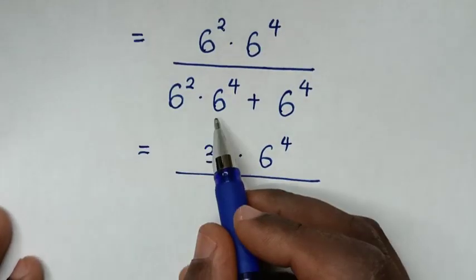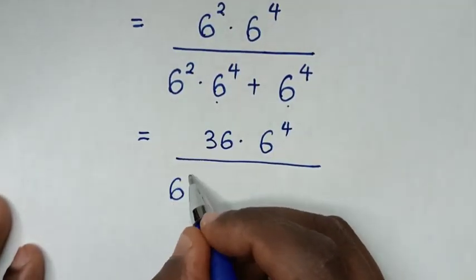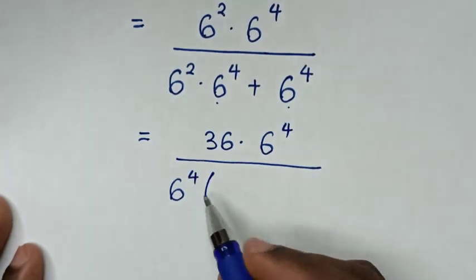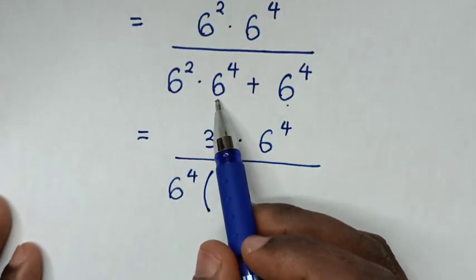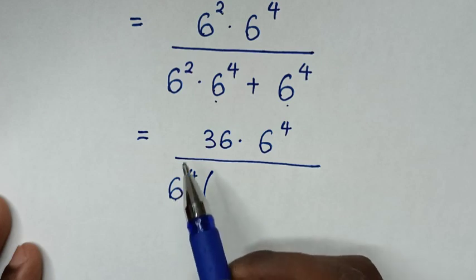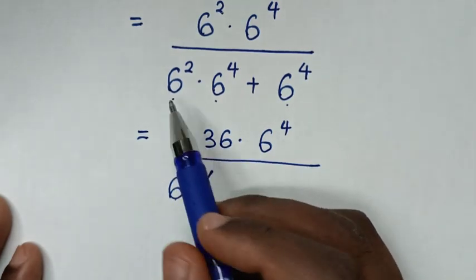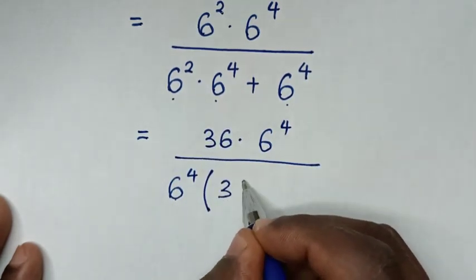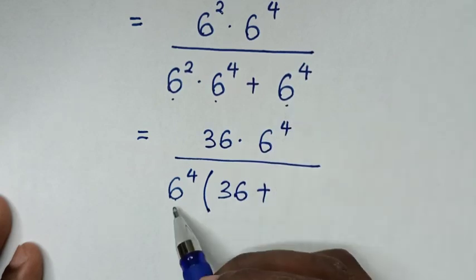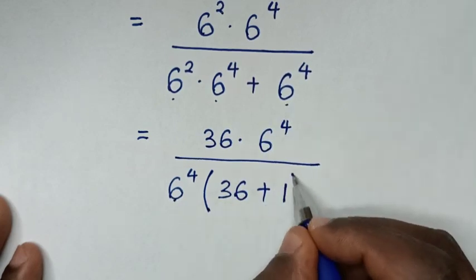In here, 6 power 4 is common, so we take 6 power 4 out of the bracket. 6 square times 6 power 4 divided by 6 power 4 is 6 square, so 6 square is 36, then plus 6 power 4 divided by 6 power 4 is 1.